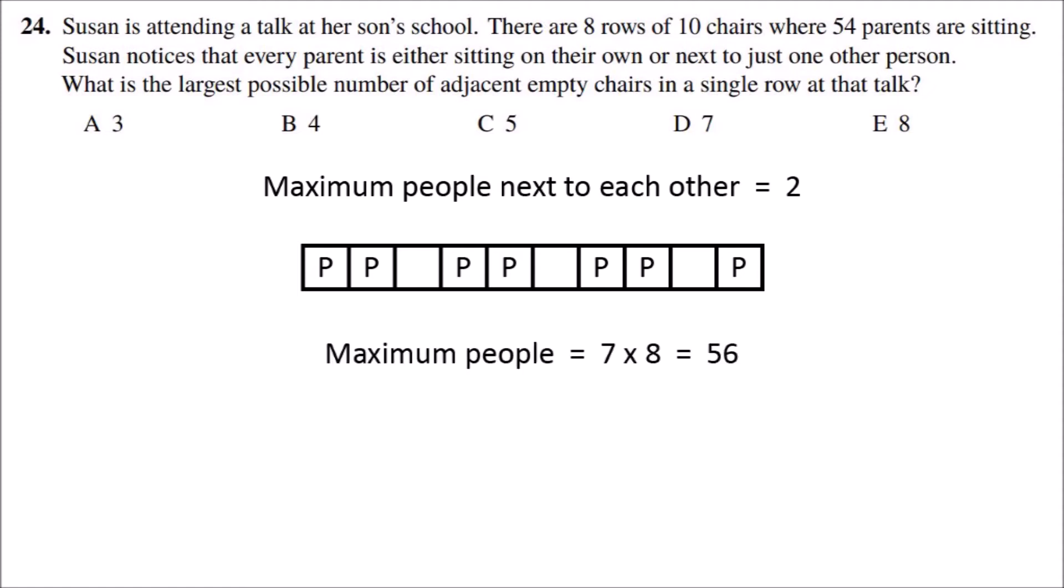So the maximum number of people that can be on all eight rows would be seven times eight, which is 56. But there are only 54 people, so there can be two extra empty chairs.